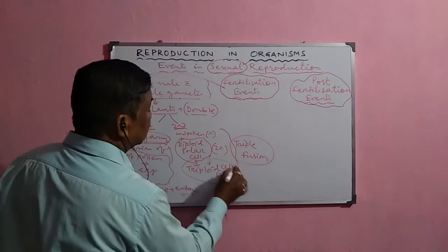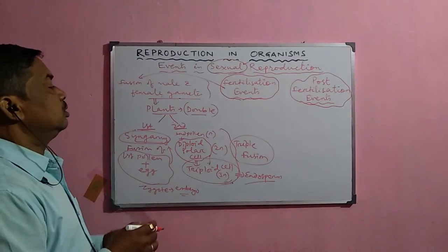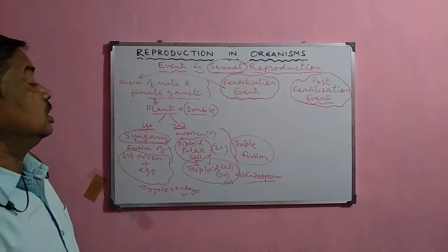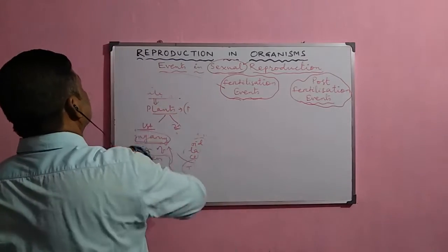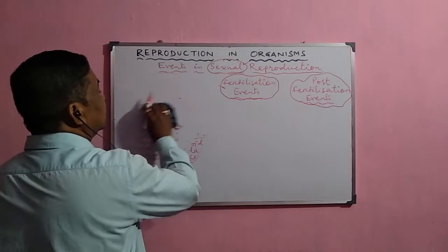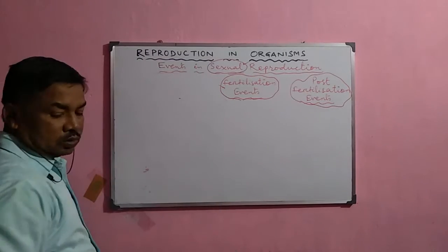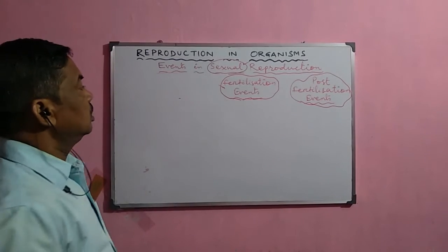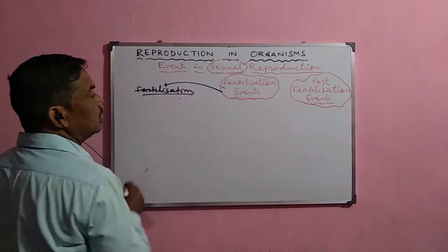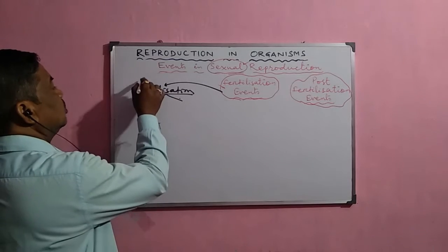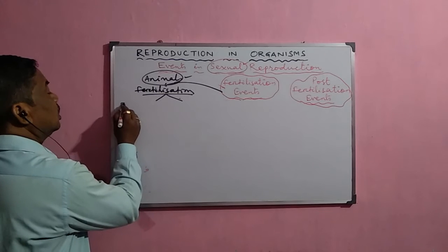The triploid cell develops into the endosperm, which is the reserve food material supplied to the developing embryo during embryogenesis. In animals, fertilization is different. Animals can be aquatic or terrestrial, and based on their habitat, their mode of fertilization differs. When fertilization occurs outside the body of the organism, it is called external fertilization.